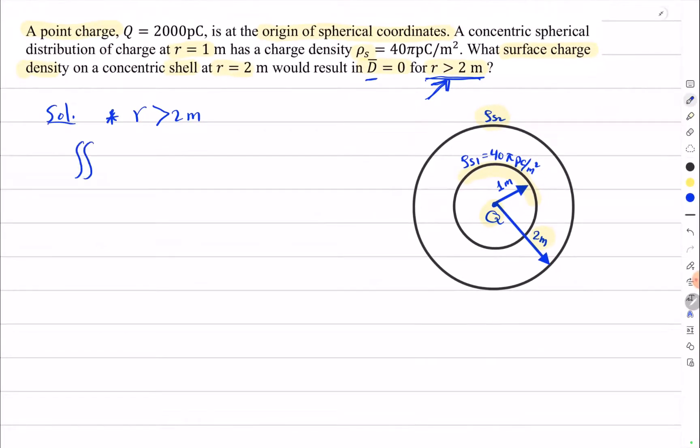Writing Gauss's Law: the integral of D dot dS equals Q enclosed.